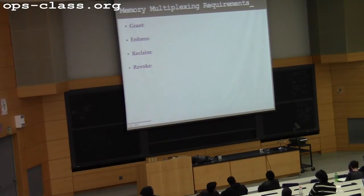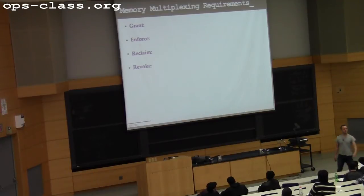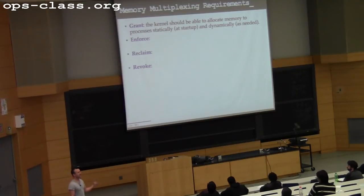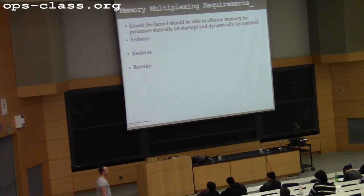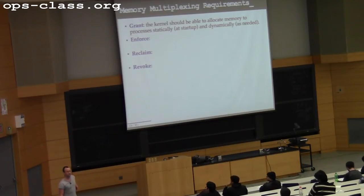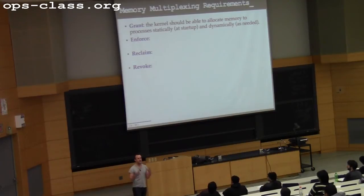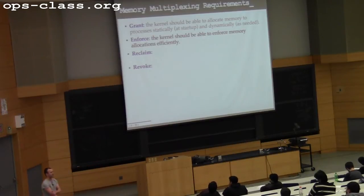What do we mean by granting memory? It should be able to give processes the ability to use memory — and we'll talk today about multiple times that happens, particularly in cases where memory is generated or allocated by system calls. Enforcement means I want to enforce my allocations and protect them from each other. I certainly don't want processes to be able to write or read from memory that they have not been granted the ability to do so.